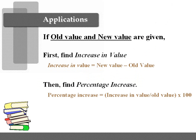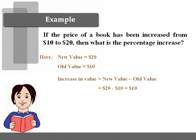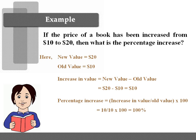Let's see an example. If the price of a book has increased from $10 to $20, what is the percentage increase? We are given the new price of $20 and the old price of $10. First, we find the increase in value: new value minus old value = $20 minus $10 = $10. Then, using the formula — increase in value divided by old value times 100 — we get 10 divided by 10 times 100. Hence, the percentage increase is 100%.